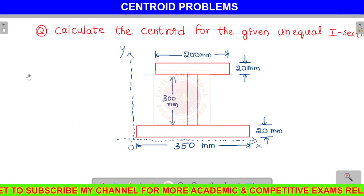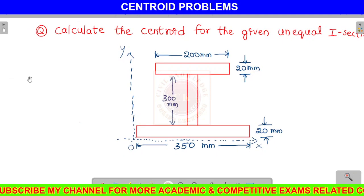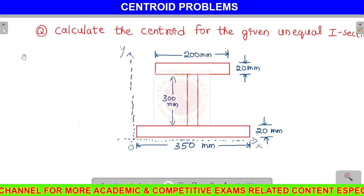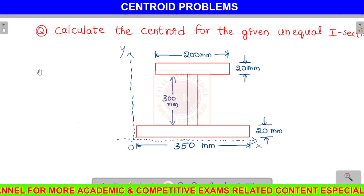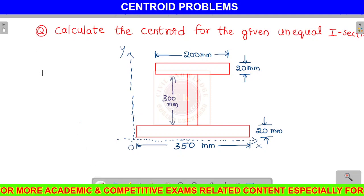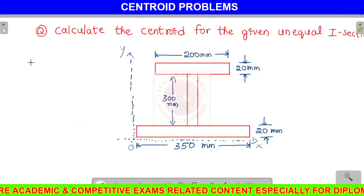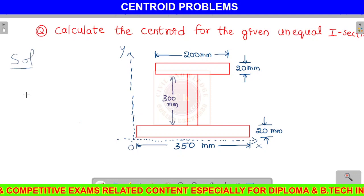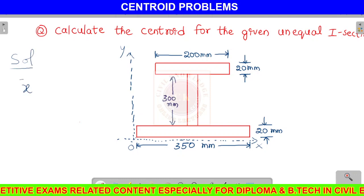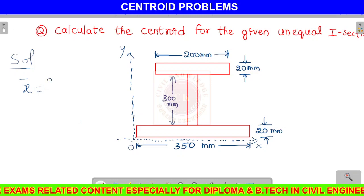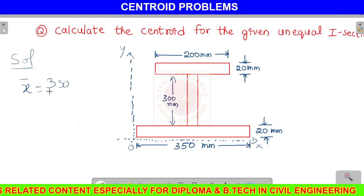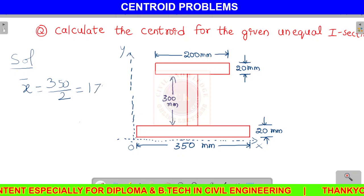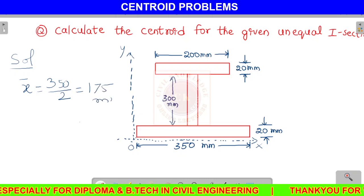So we can easily calculate x-bar, which is nothing but 350 divided by 2, which is nothing but 175 mm.